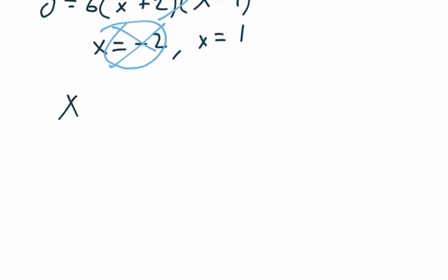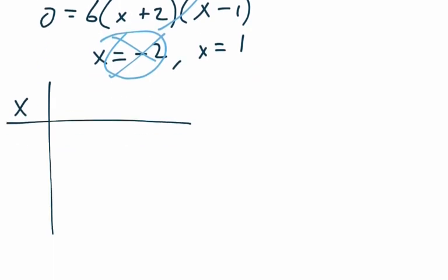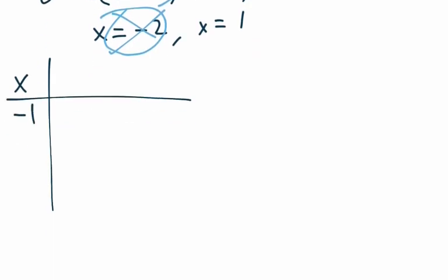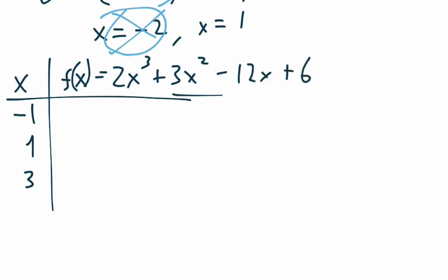So here we have x. And the x values here are negative 1 is our first endpoint, then we have an interior point of positive 1, and then the other endpoint of 3. And then our function f of x, again, was 2x cubed plus 3x squared minus 12x plus 6.